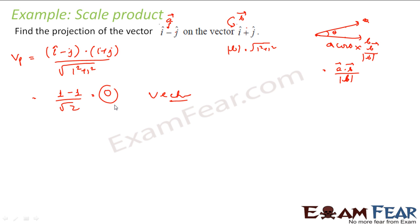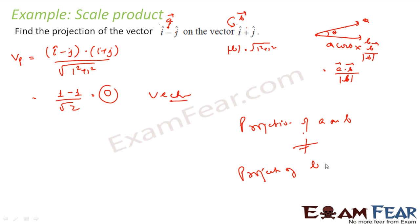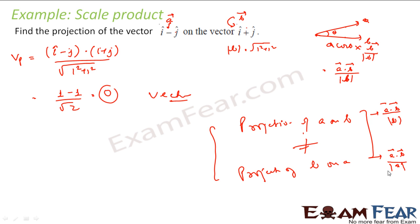This is a zero vector — when you project vector a on vector b in this case, you get a zero vector. Note that projection of a on b is not equal to projection of b on a — both are different. The direction is different, and the magnitude will also be different. Projection of a on b equals a dot b divided by |b|, while projection of b on a equals a dot b divided by |a|. Both are different.